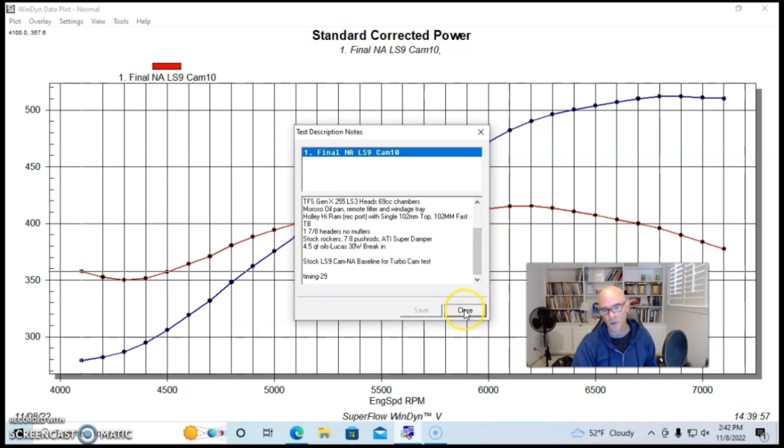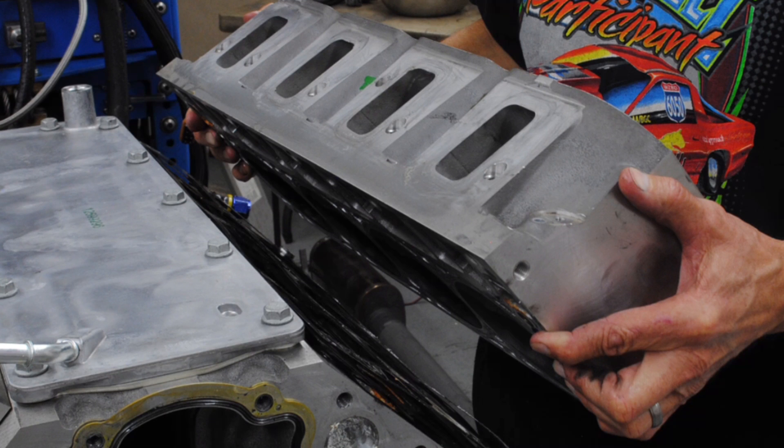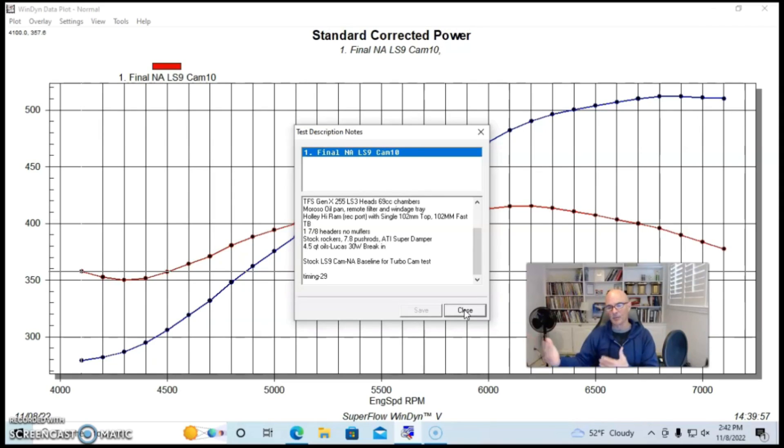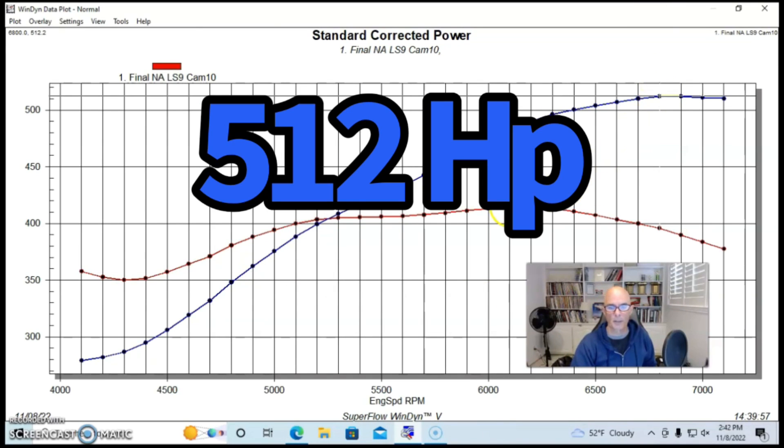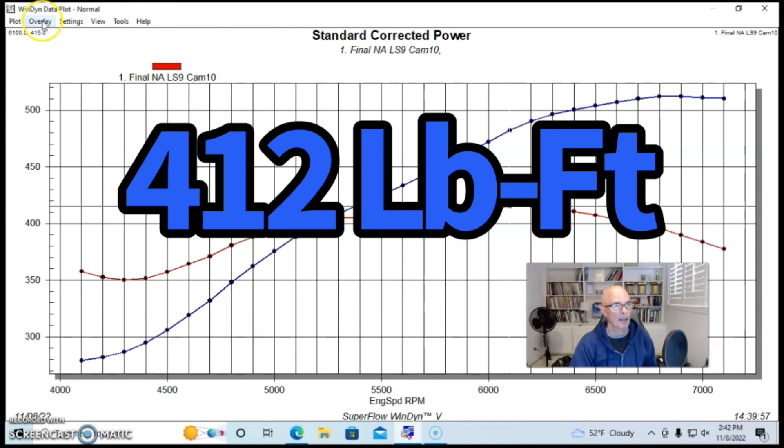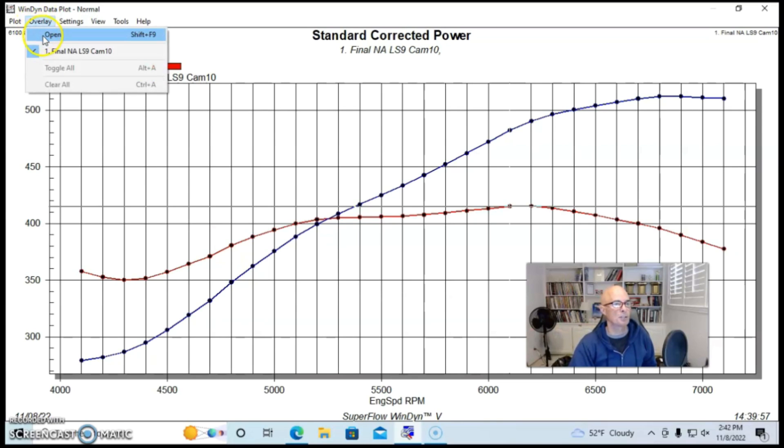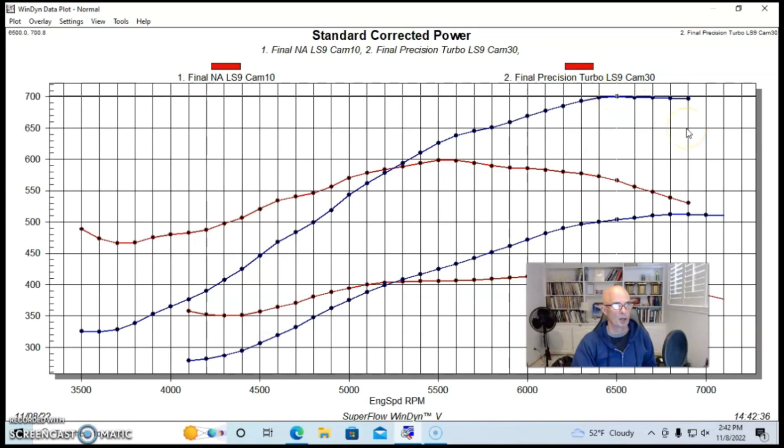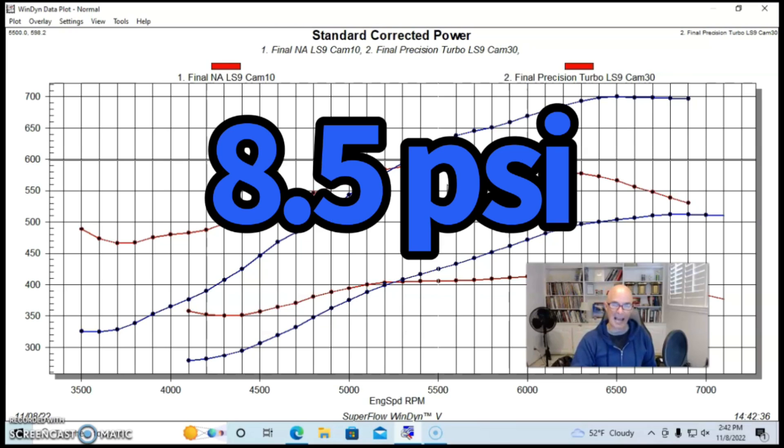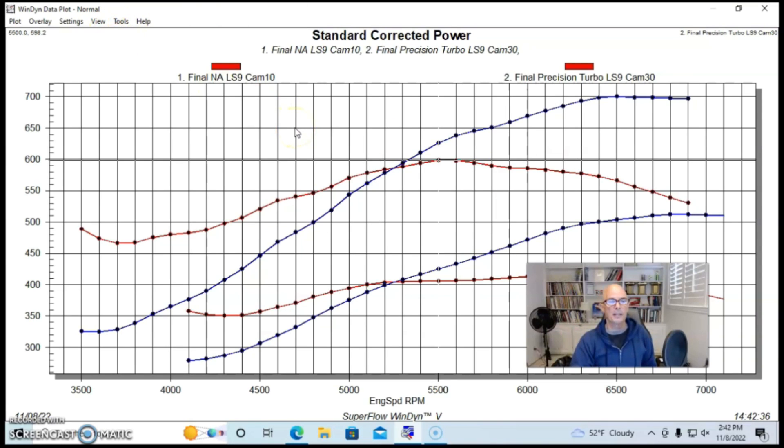We started off this test with a stock LS9 camshaft because we wanted to do some testing with different camshafts. We ran this thing as a baseline and then added a turbo to it. This will illustrate how well any sort of rec port head actually works very well, whether it's a stock set of LS3 or LY6 rec port heads or any of the aftermarket ones. Here's what happened when we ran this de-stroke LS3 with the LS9 camshaft, which is not terribly powerful, but it produced peak power of 512 horsepower and 415 foot pounds of torque. To illustrate that rec port heads obviously work with boost, here's what happened when we added boost. Peak power jumped up by almost 200 horsepower to 701 horsepower. Peak torque was up to 598 foot pounds. This was at a peak boost of about eight and a half pounds at the horsepower peak.